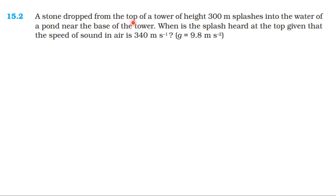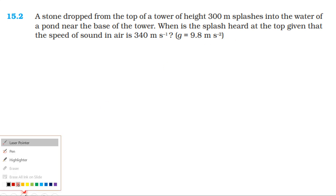A stone is dropped from the top of a tower of height 300 meters and splashes into the water of a pond near the base of the tower. When is the splash heard at the top, given that the speed of sound in air is 340 meters per second and g equals 9.8 meters per second squared?